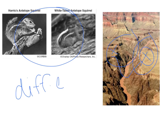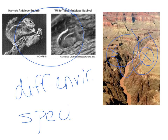The environment on each side of the canyon was different, so by being in this different environment, different alleles and different traits were favored. The squirrels that had these different traits were able to survive and reproduce, and eventually speciation occurred. If you put a male Harris's antelope squirrel and a female white-tailed antelope squirrel together, they would not be able to reproduce and produce a viable offspring.